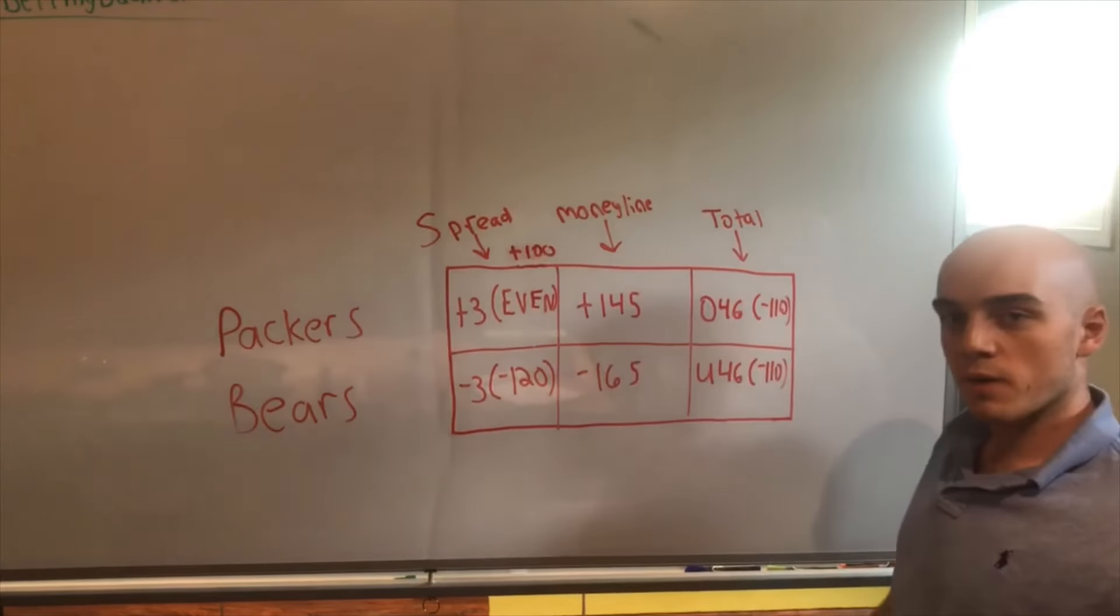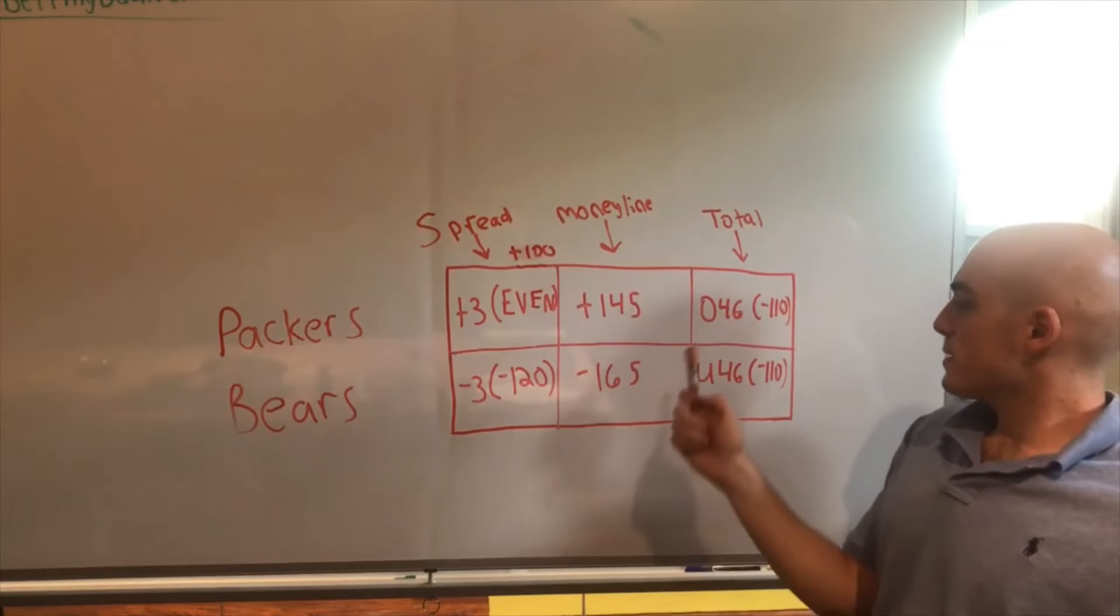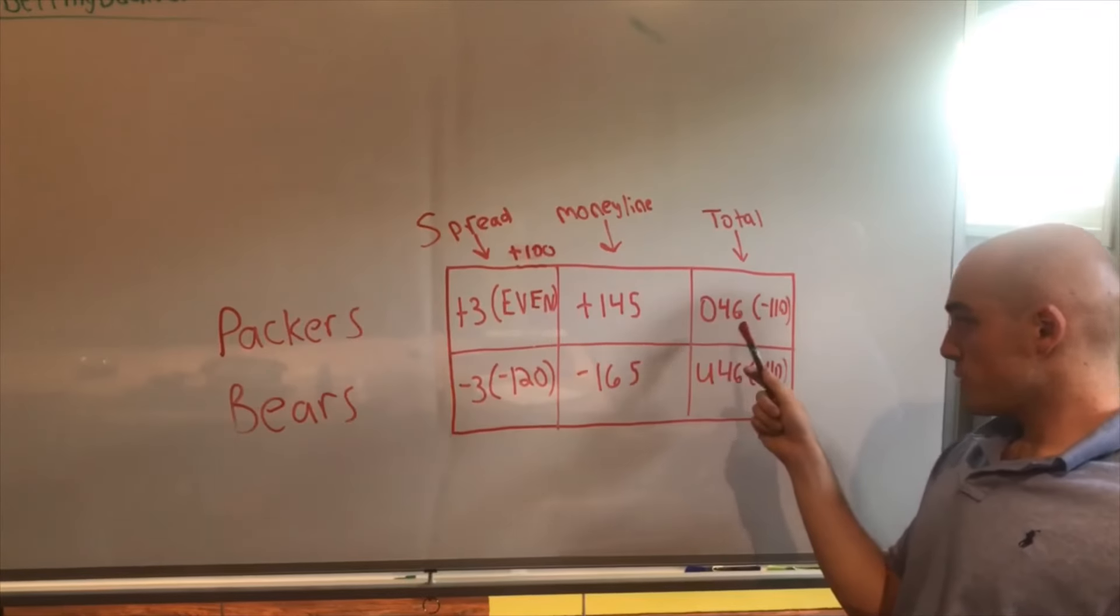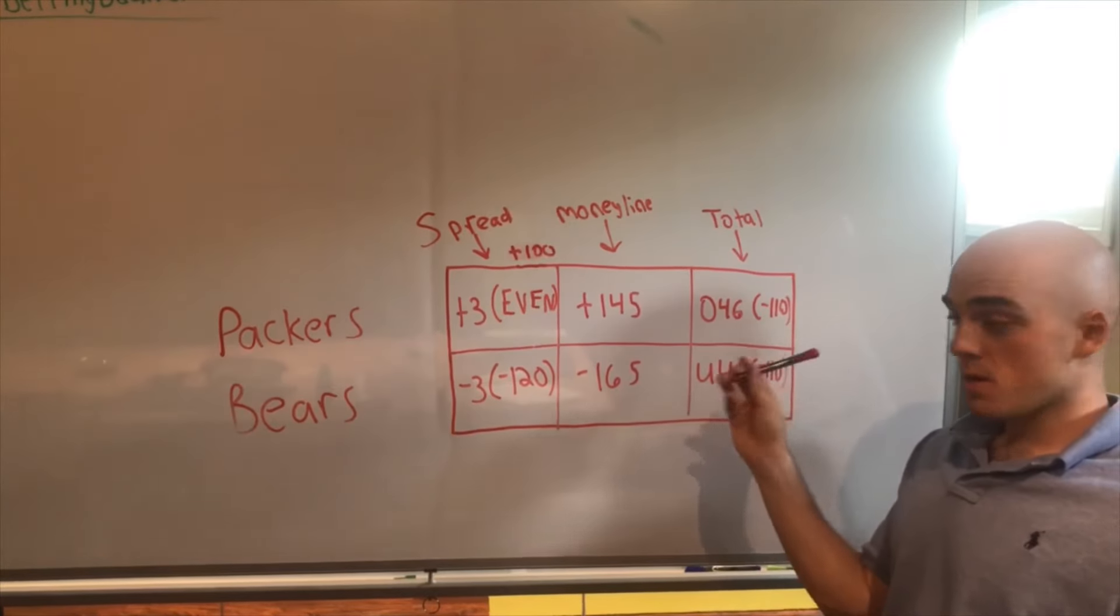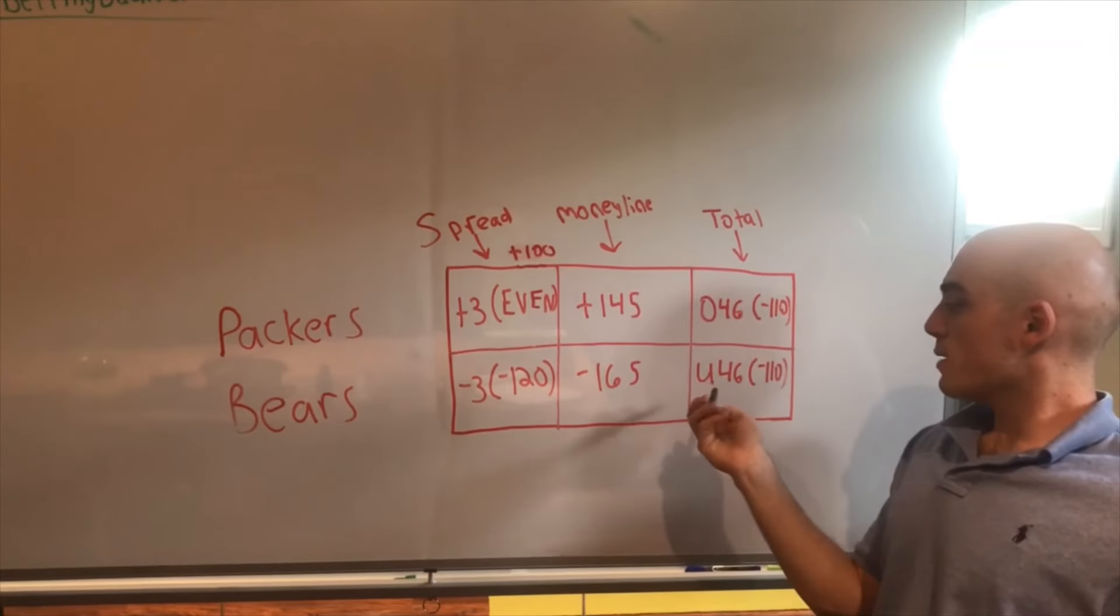Last but not least, we have our total bets, often interchangeable with over-under. In this instance, the total is set at 46. So at the conclusion of the game, you take the total score for each team and add it up, and that's your total score.